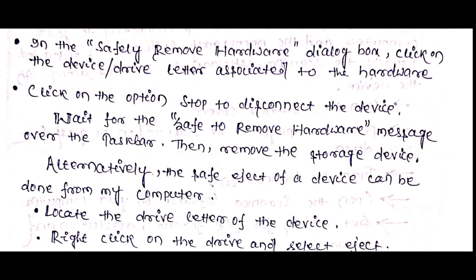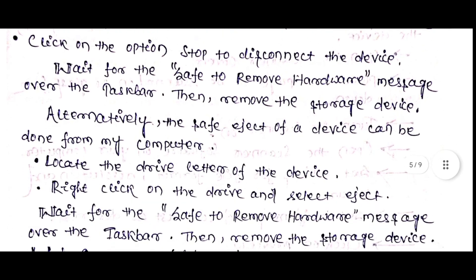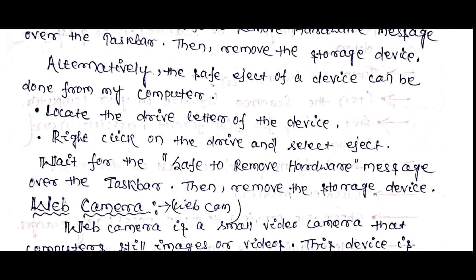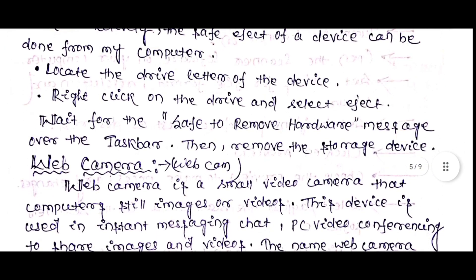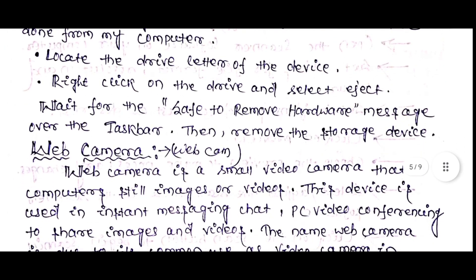Wait for the Safe to Remove Hardware message over the taskbar. Then remove the storage device. Alternatively, the safe eject of a device can be done from My Computer. Locate the device letter, right-click on the device, and select Eject. Wait for the Safe to Remove Hardware message, then remove the storage device.